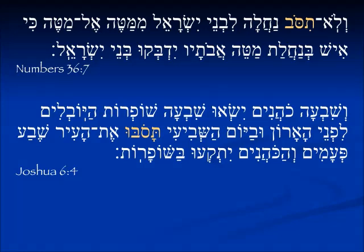In Numbers 36:7, this is talking about each tribe keeping its inheritance and not going from one tribe to another. Do not turn around the inheritance of the children of Israel from tribe to tribe. Again in Joshua 6:4, we see an imperfect tense — all y'all will be going around again. And on the seventh day you will go around — one bet — the city seven times. And we know that they did, and we know that it worked.